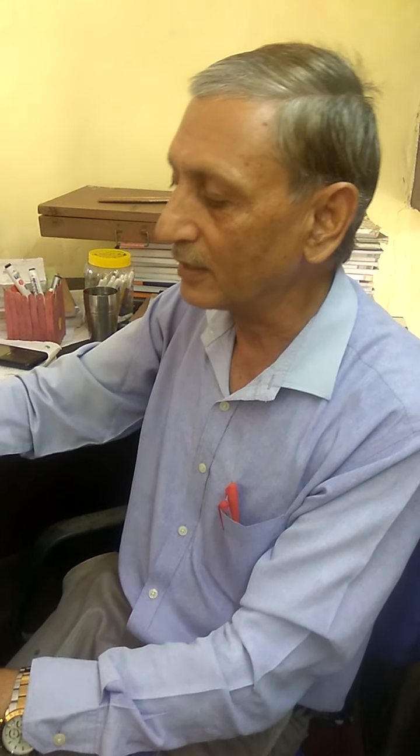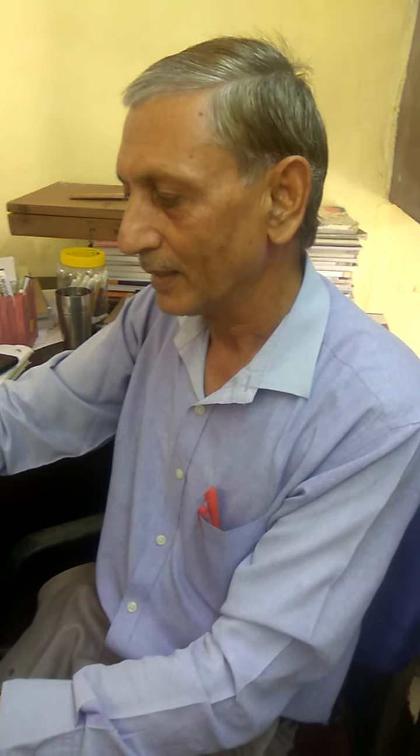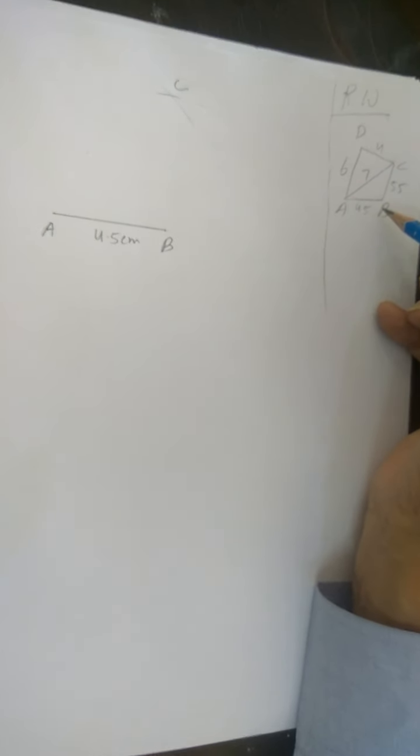The easiest way to construct a quadrilateral is to make a rough figure in the rough work column. And then I have constructed this just a rough figure. Now what shall I do?